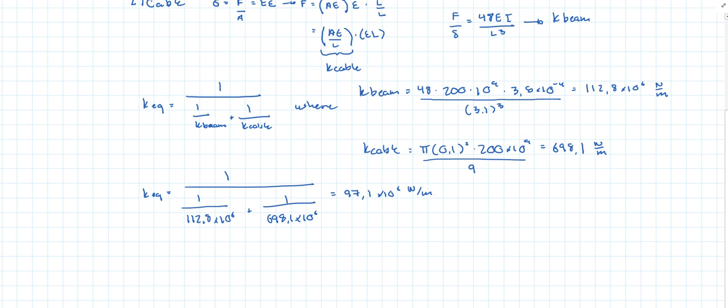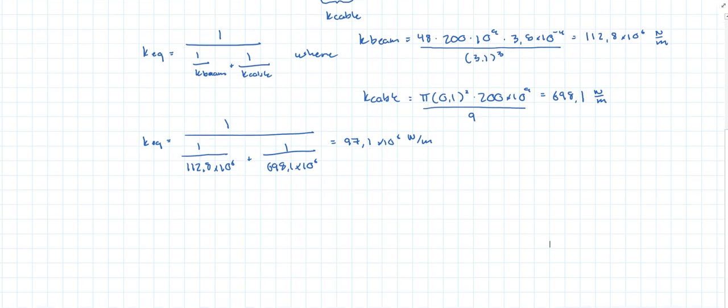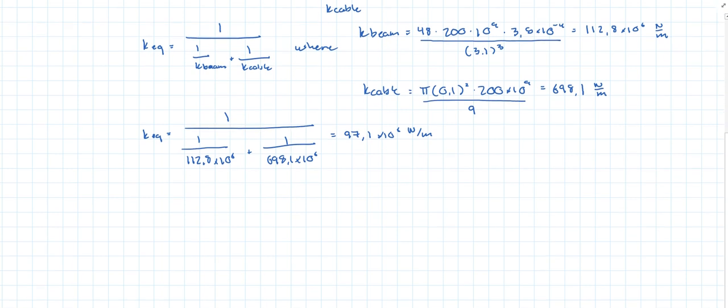Notice that this value is always smaller than all of the elements that you have in the denominator. So the first one was 112 and the other one 698. The resultant is 97.1. That's a pattern that you're always going to see. So we are almost done. We're just going to draw the new system or the equivalent system to answer the question.